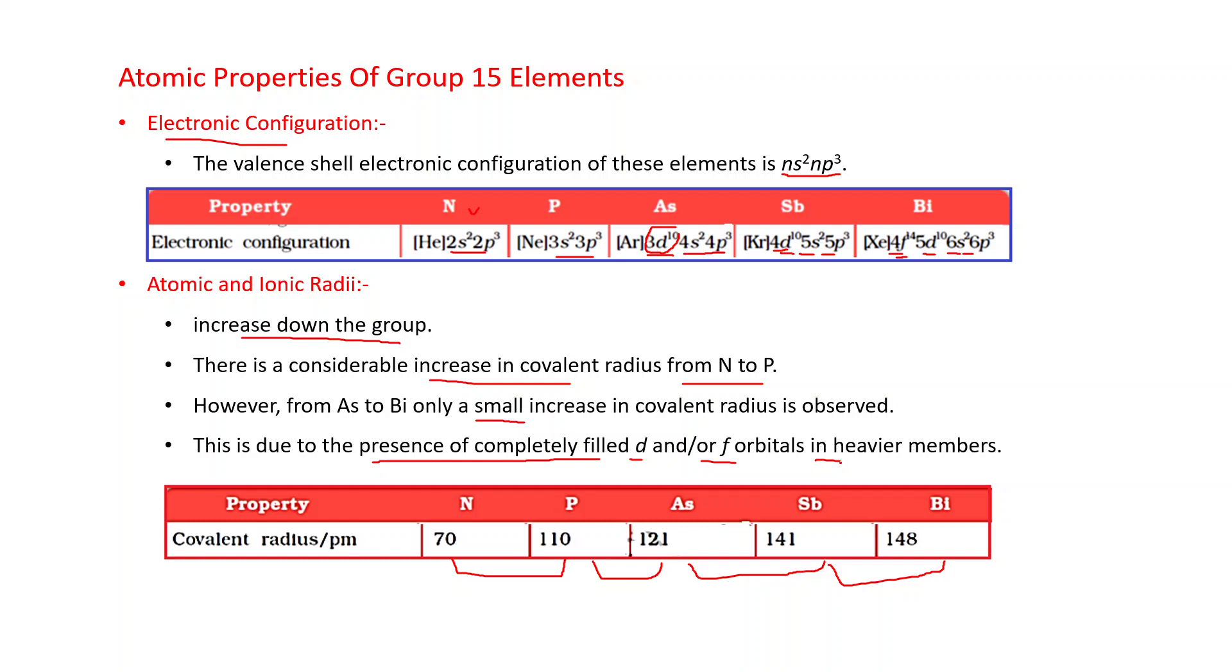As we have seen in the electronic configuration, in arsenic 3d10 is there, in Sb 4d10 is there, and in Bi 4f14 and 5d10 are there. These d and f subshells are diffused, so they have poor shielding effect. When shielding effect is poor, effective nuclear charge is more. That is why this increase in size is less.